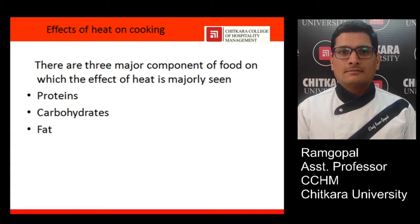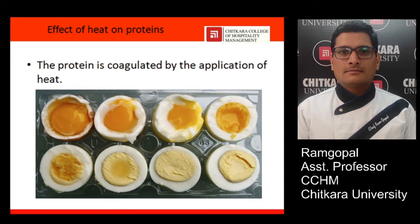Basically, if we talk about the effect of heat on cooking, there are three major components in which heat affects a lot. The effect of heat is majorly seen on proteins, carbohydrates, and fat. In this video we will discuss about the effect of heat on protein, and then carbohydrates and fat in another video.